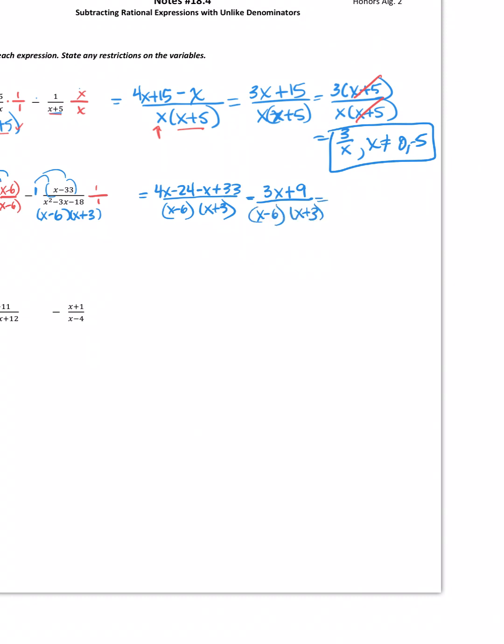Hopefully, you recognize there's a GCF in the numerator. That will give me, if I take a 3 out, I'll have x plus 3. Then, I can start reducing because I have an x plus 3 factor in my denominator. So, then, my simplified expression would be 3 over x minus 6. But then, look at your restrictions. x cannot be, that would be a 6, and this would be a negative 3. Those are my restrictions on this guy.